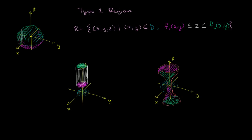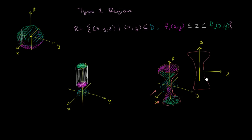Another way to see this: if we look at the zy-plane cross-section, the dumbbell shape shows that for a given y value, there are two possible z values on the top part alone. You can't define it simply in terms of just one lower bound function and one upper bound function.